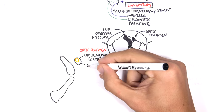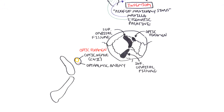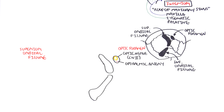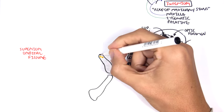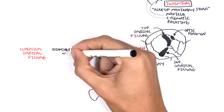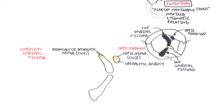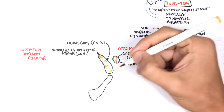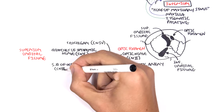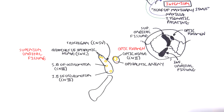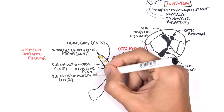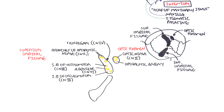The superior orbital fissure has many structures passing through it. The nerves include branches of the ophthalmic nerve V1, a branch of cranial nerve five; the trochlear nerve, cranial nerve four; the superior and inferior branches of the oculomotor nerve, cranial nerve three; and the abducens nerve, cranial nerve six. These nerves innervate the muscles responsible for moving the eyeball. The superior ophthalmic vein also passes through here.